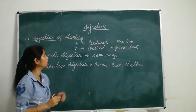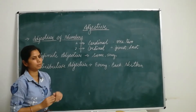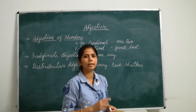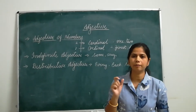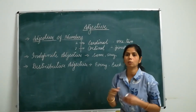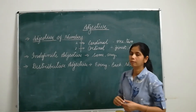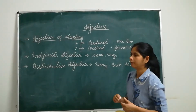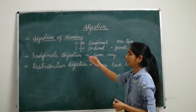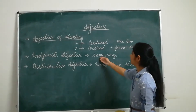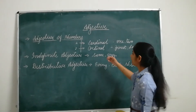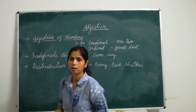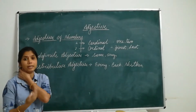So when these numbers are used with a noun, they are adjectives of numbers. The next type of adjective is the indefinite adjective. The word 'indefinite' means something that is not certain or not specific. When the adjective is not definite, it is indefinite. Adjectives like 'some' and 'any' are indefinite adjectives. When we use 'some' or 'any', there is no definiteness — it could be anything.